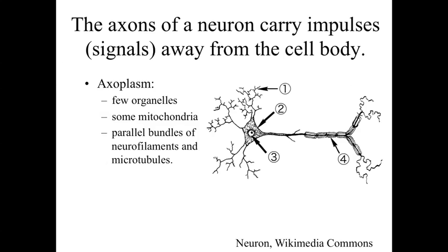Neurons also have axons. Most neurons have a fairly long axon, though some are short and some have very little axon at all. Axons are cytoplasmic extensions from the cell body focused on carrying impulses away from the cell body. They carry the message to a target cell — whether another neuron, a muscle cell, or a gland cell.